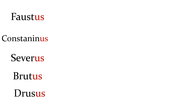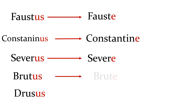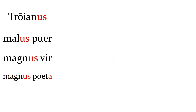If you want to address somebody named Faustus, you would call him Fauste. Constantinus will be called Constantine. Severus — not to be confused with servus the slave — will be called Severe. Brutus will be called Brute, like "Et tu, Brute" — Julius Caesar's dying words to Brutus, although he didn't say them in Latin. And if you want to address a Trojan, Troianus, you will call him Troiane.